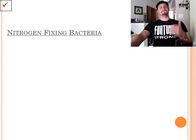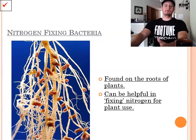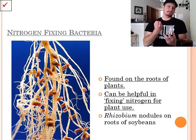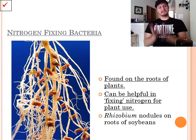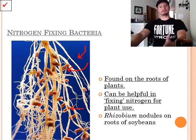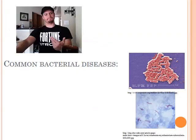So, nitrogen fixing bacteria. Nitrogen fixing bacteria basically lives inside the roots of plants. What they do is it can be helpful in fixing nitrogen for plant use. The nitrogen in the soil, the plants can't actually use yet. So, what the bacteria does is it takes in that nitrogen, and converts it into a form that the plants can use. From there, the plants then use the nitrogen, which is essential for life, to go through its daily processes. An example of this is the rhizobium nodules found in the roots of soybeans. Do you see these little bulges there? Those are the rhizobium nodules that contain our bacteria, which help the plant live through its day-to-day basis.